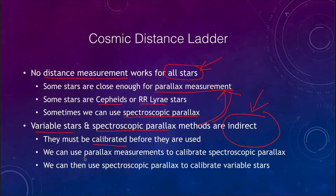We can use parallax measurements to calibrate spectroscopic parallax, then use spectroscopic parallax measurements to calibrate variable stars, and we build on this over time. As we measure stars further and further away and start using galaxies, we use this calibration chain to determine distances that are progressively further away.